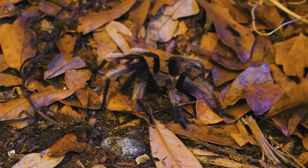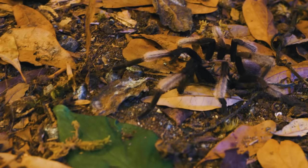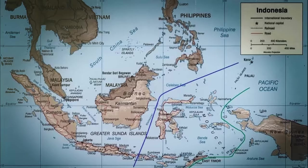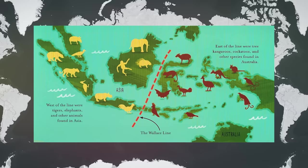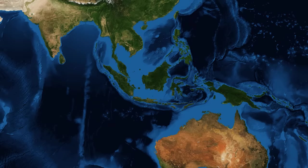Surprisingly, the first group that reached Asia also managed to cross the Wallace Line, which is a fascinating concept in biogeography, named after the 19th-century naturalist Alfred Russell Wallace. Wallace noticed distinct differences in the animal species on either side of the line during his travels in the Malay Archipelago.